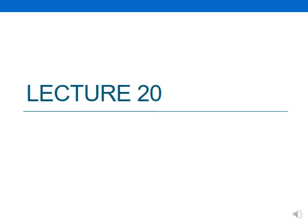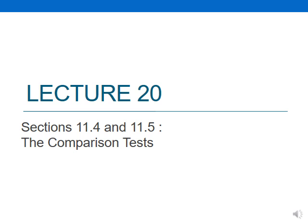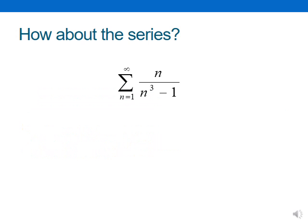Hello. In this lecture, we want to cover sections 11.4 and 11.5 about comparison tests. We noticed from the comparison tests, parts 1 and 2, that the terms of the series being tested must be smaller than those of a convergent series, or they should be larger than those of a divergent series.